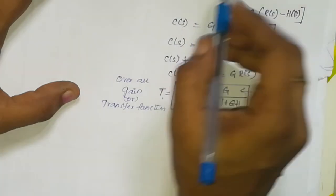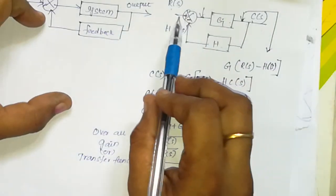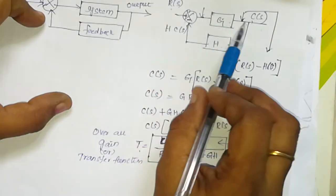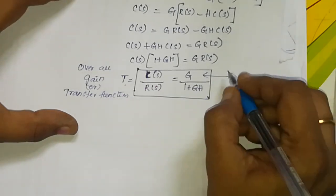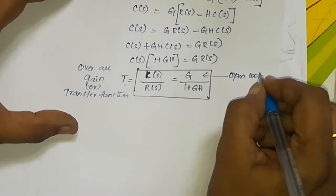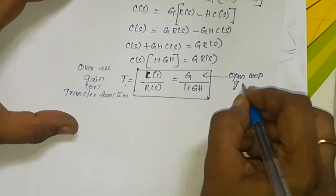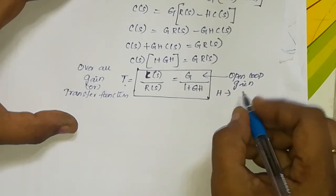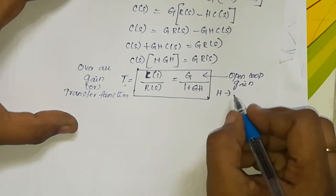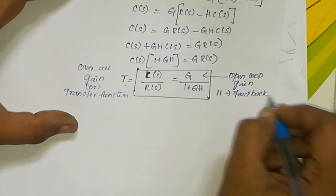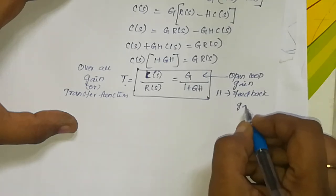So G is the open-loop gain, and H is the feedback gain. That is the formula for the closed-loop transfer function with negative feedback.